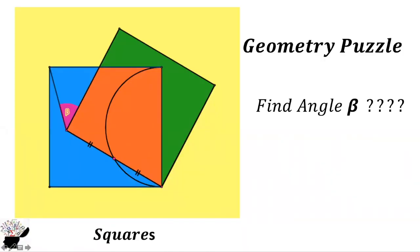Welcome to my YouTube channel. Let's consider this quick geometric puzzle. We are supposed to find the angle beta. We have two squares, and the condition is that this length is equal to this length. We need to find beta — how can we find it?